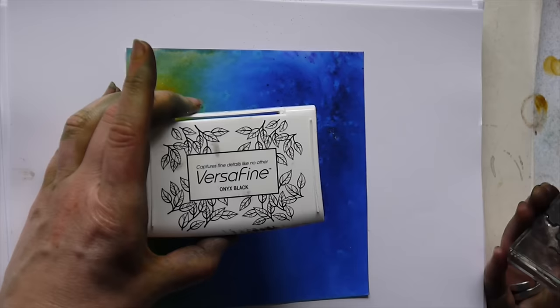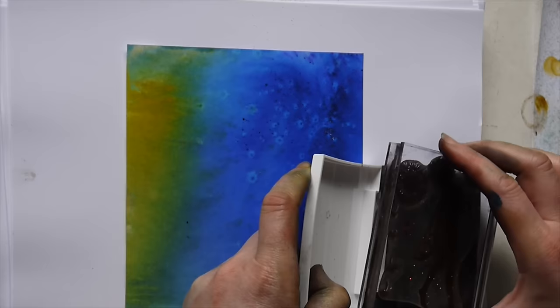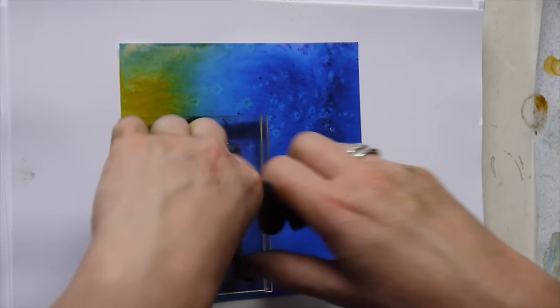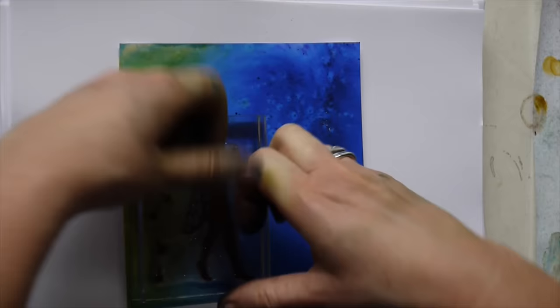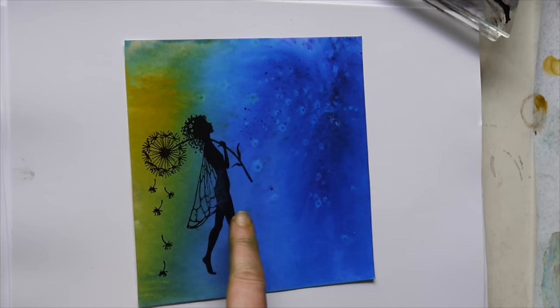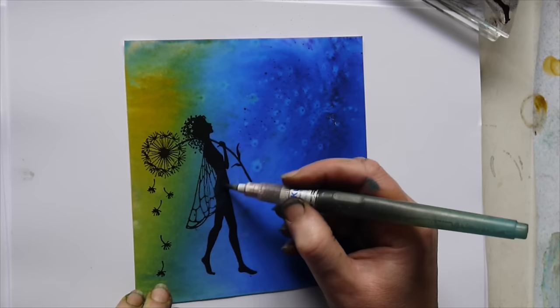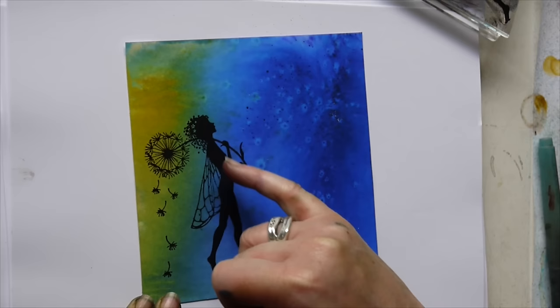So moving back to our VersaFine Onyx Black, I'm going to stamp her down onto the Brusho card now. Just make sure she's completely covered. Good press down. And there we go. If you've got any areas at all that are just slightly missed, just touch that up. There we go. But you can see the detail in that.